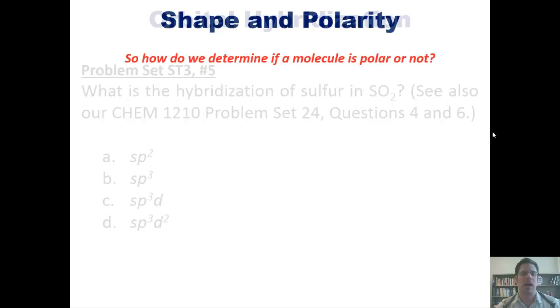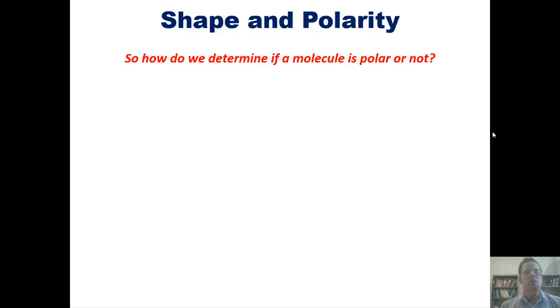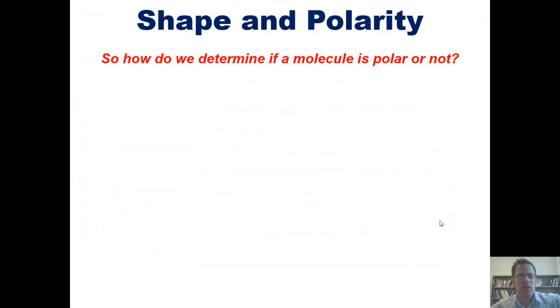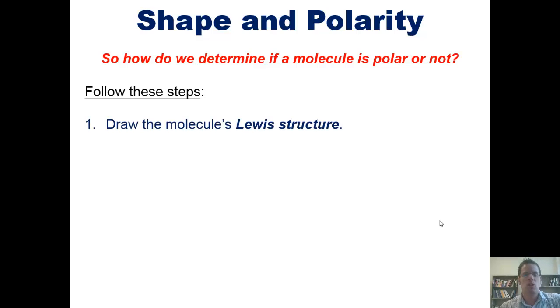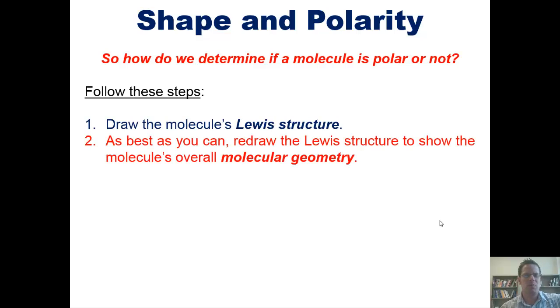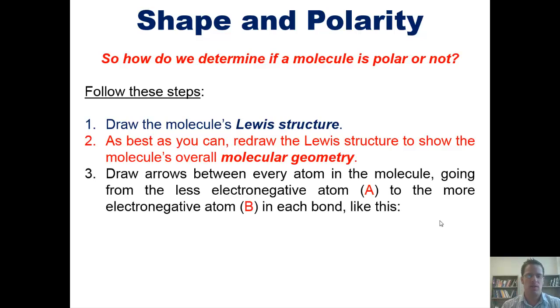Now to another subject, shape and polarity. So how do we determine if a molecule is polar or not? The way we do it is we follow these steps. First, draw the molecule's Lewis structure. Second, as best you can, redraw the Lewis structure to show the molecule's overall molecular geometry or shape. Third, draw arrows between every atom in the molecule going from the less electronegative atom, A, or whatever atom it happens to be, to the more electronegative atom, B, in each bond, like this.